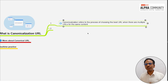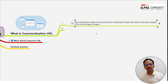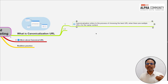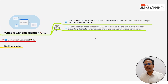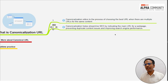Canonicalization refers to the process of choosing the best URL when there are multiple URLs for the same content. When there are multiple URLs for the same content, Google and other search engines need to identify the best URL. Canonicalization helps streamline SEO by indicating the main URL for a web page, preventing duplicate content issues, and improving search engine performance.